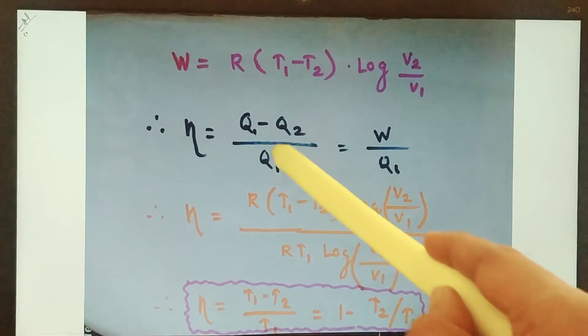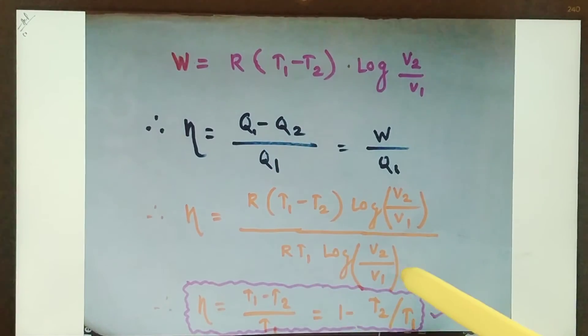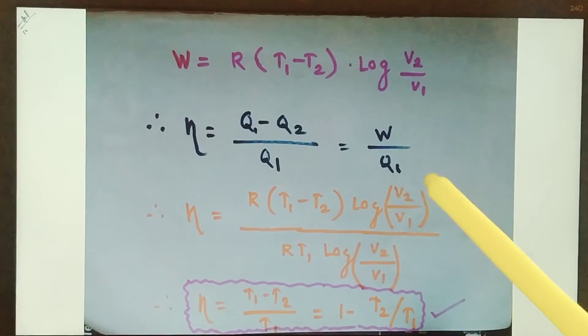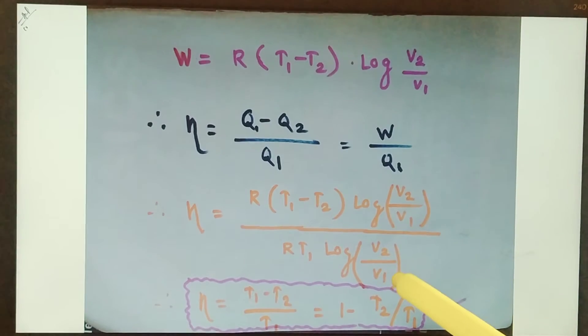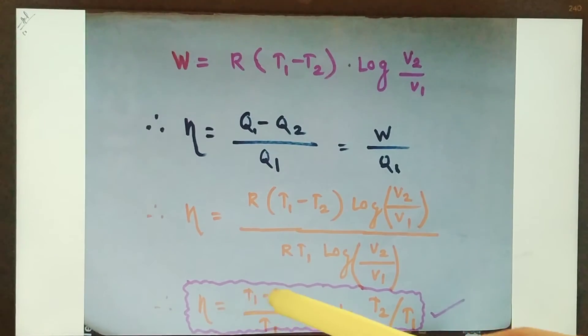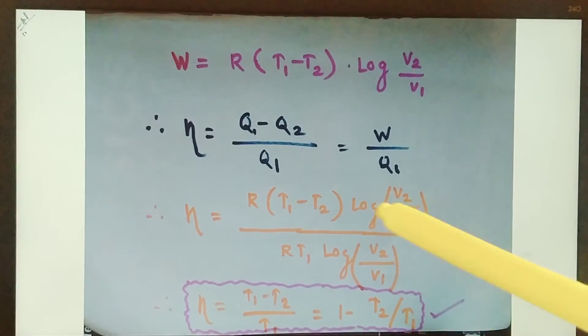The input is nothing but R T1 times log of V2 by V1. This is nothing but the isothermal expansion, the amount of heat supplied to the system. So total efficiency of the machine, that is output upon input, comes out to be eta times T1 minus T2 upon T1, which is equal to 1 minus T2 by T1.